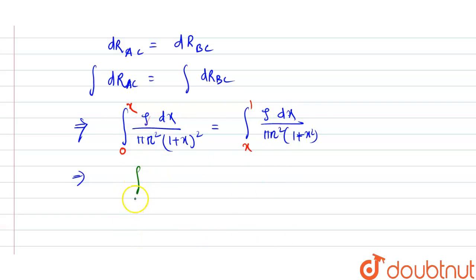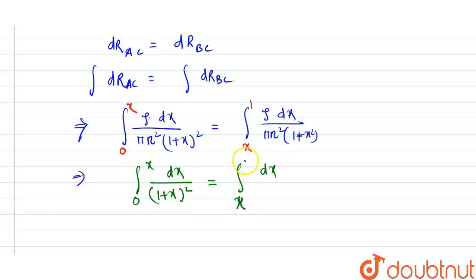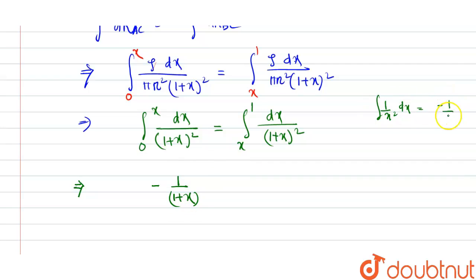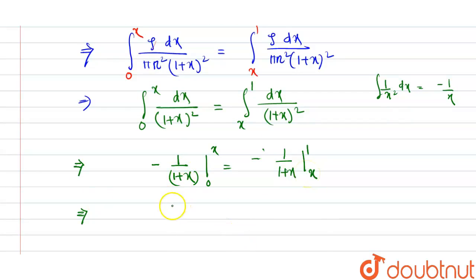Evaluating the integrals: the integral of 1/(1+x)² dx equals −1/(1+x). Applying limits, the left side gives [−1/(1+x)] from 0 to x, which equals 1 − 1/(1+x). The right side gives [−1/(1+x)] from x to 1 meter, giving 1/(1+x) − 1/2. Setting these equal: 1 − 1/(1+x) = 1/(1+x) − 1/2, which rearranges to 2/(1+x) = 3/2.